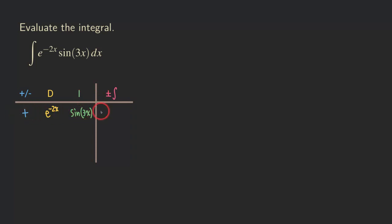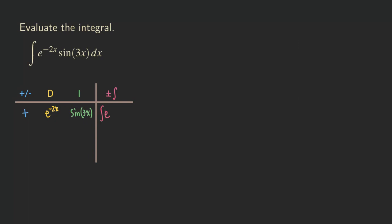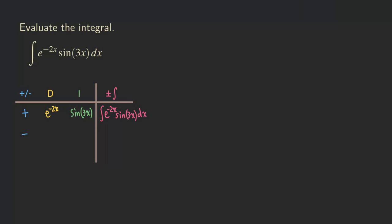If we multiply all this together, we get that original integral: e to the negative 2x times sine of 3x dx. Now let's go down the table. We differentiate e to the negative 2x, giving us negative 2 e to the negative 2x — that's due to the chain rule, so we have the negative 2 out front. And then we integrate sine of 3x, giving us negative 1 over 3 cosine of 3x.